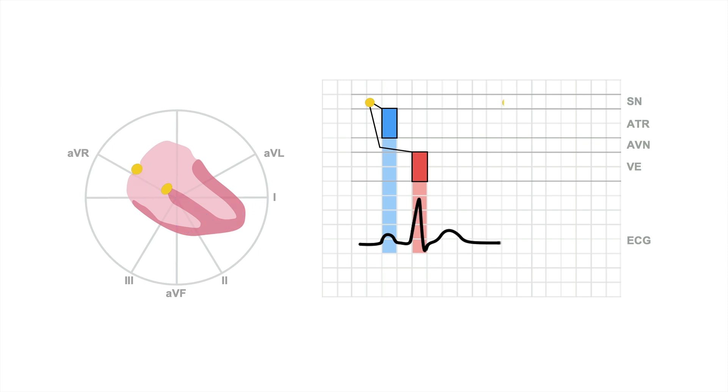The sinus node discharges, depicted up here. Then the impulse travels down through the atria causing atrial depolarization depicted by our blue box or the P wave down here.